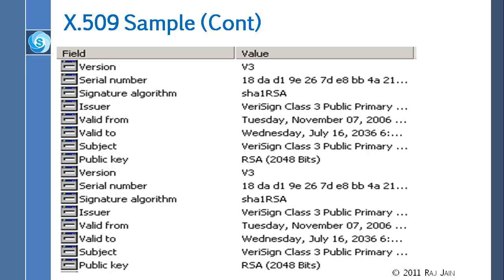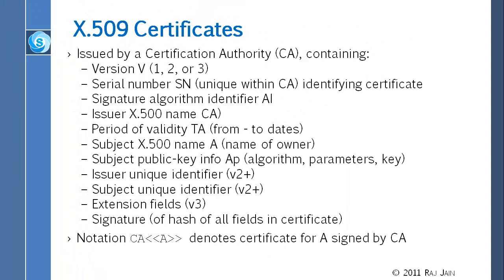If you go into any of the certificates, you will find all this information which we went through. Some belong to version one, some to version two, some to version three — right now we are in version three. The main issue with version one was that it allowed X.500 names, which are something that we don't generally like or use.